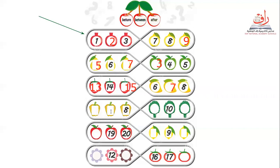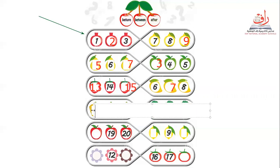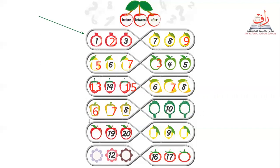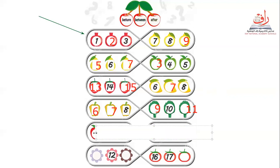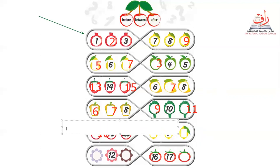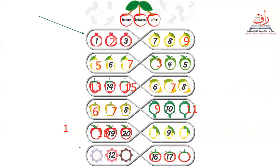We have here number eight. What is the number before eight? Seven. And before seven? Six. Excellent! So the answer is six, seven, eight. Let's go next. We have in the middle number ten. Before number ten? Nine. Well done. And after ten? Eleven. Good job! We have 19 and 20. Before 19? Eighteen. Excellent!